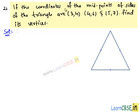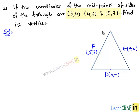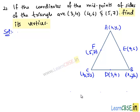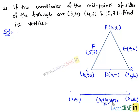Here, in this problem, we are given with the coordinates of the midpoints of the sides of the triangle, say D, E, and F. And we need to find the coordinates of the vertices of the triangle. Let A, B, and C be the vertices of the triangle ABC. We know that the midpoint of the line joining the two points (x1, y1) and (x2, y2) is given by ((x1+x2)/2, (y1+y2)/2).